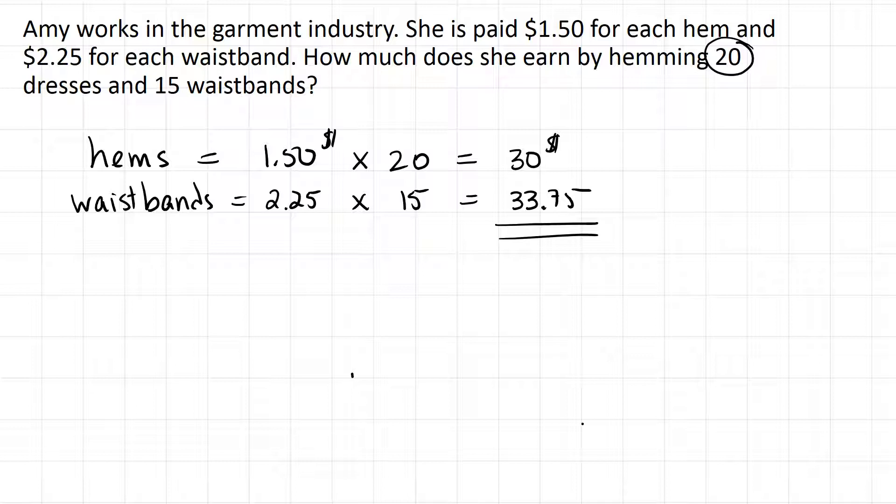So her total earnings are $63.75. Now is that a lot? Well that depends on whether or not she spent a lot of time or a little time on this. Imagine if she spent one hour on this work - if she made $63.75, that would be $63.75 per hour. That would be a pretty high wage and I would say yeah, she's paid a lot for that.